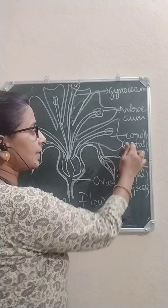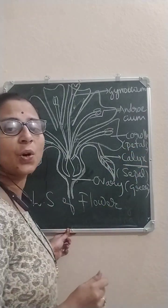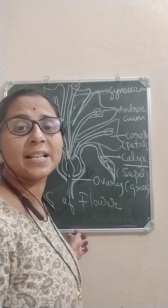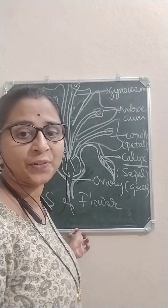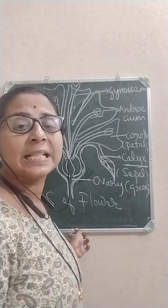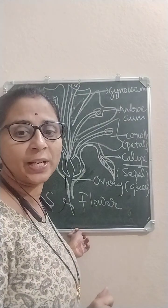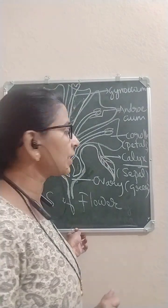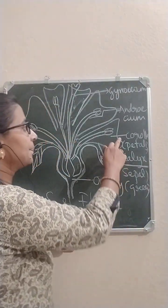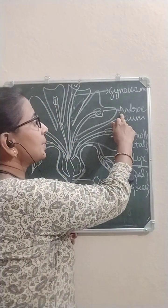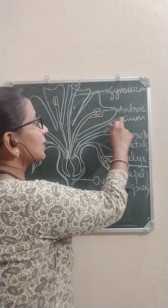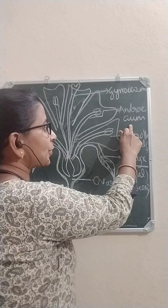Calyx and corolla are called non-essential parts of a flower since they do not play any role in sexual reproduction. The third member of a flower is called androecium.